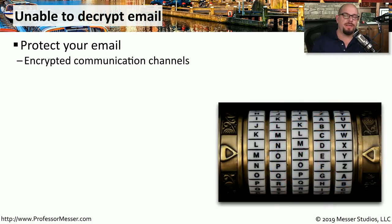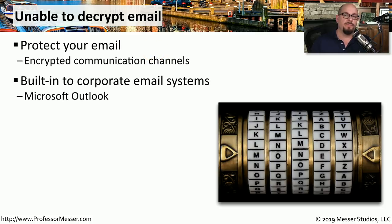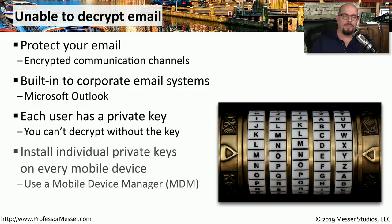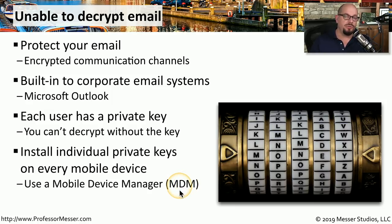Whenever we're sending or receiving emails from mobile devices, we're almost always doing it over an encrypted channel to provide the highest level of security. If you're having problems decrypting incoming email, check the configuration settings for email on your mobile device. In a corporate environment using Microsoft Outlook, each individual user has their own private key, and information cannot be decrypted unless the private key is properly installed on that device. Private keys are usually deployed from a central management station such as a Mobile Device Manager, or MDM.